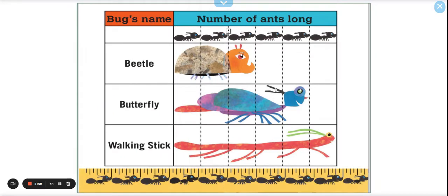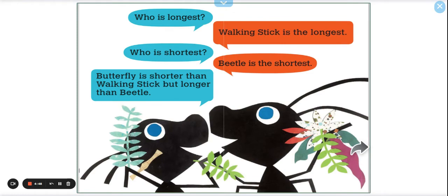So here we have another table. This is the one that I liked. We have the bug's name is in this column and the number of ants long right here. Remember, when we're doing a graph, we have to have those titles to help us understand the data that we collected. The data that we collected are the bugs. A beetle is how many ants long? Three. Good job. A butterfly. Oh, we might have to count these. One, two, three, four, five ants long is the butterfly. And what about the walking stick? Let's count these by twos. Two, four, six. The walking stick is six ants long.